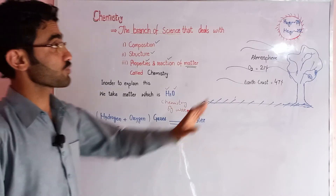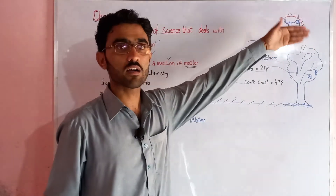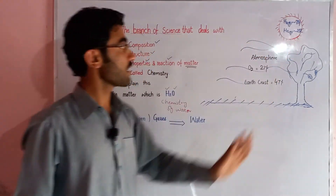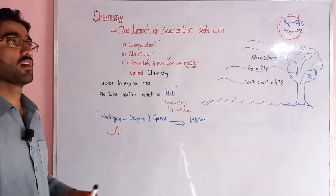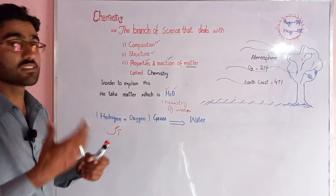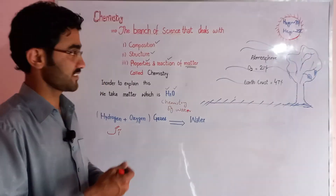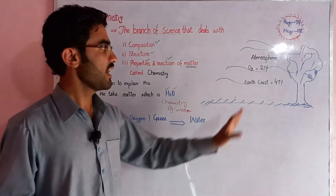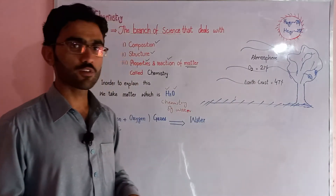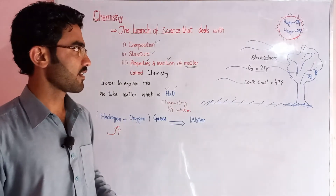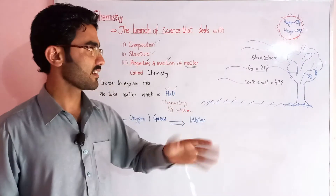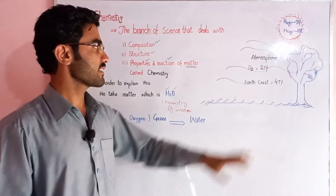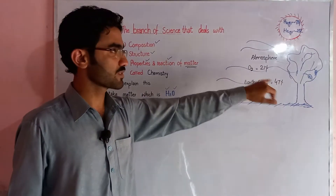Hydrogen most abundantly sun کے اندر موجود ہے۔ Sun کے اندر آگ مسلسل جل رہی ہے تب ہی heat and energy ہمیں provide ہو رہی ہے — اس کا مطلب ہے hydrogen gas کو بطور آگ کے لیا جا سکتا ہے۔ اب oxygen gas کی بات کریں — atmosphere کے اندر 21% oxygen gas ہے اور earth's crust پر بھی 47% oxygen gas ہے۔